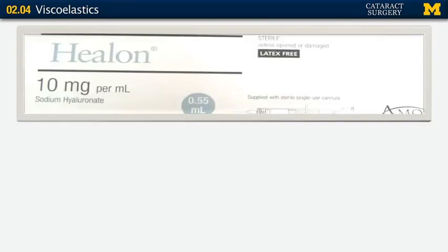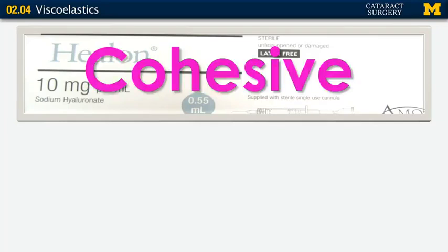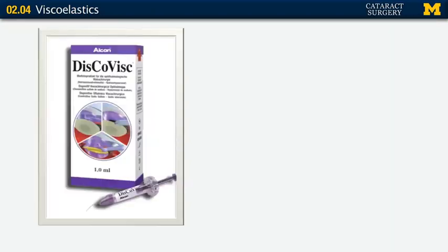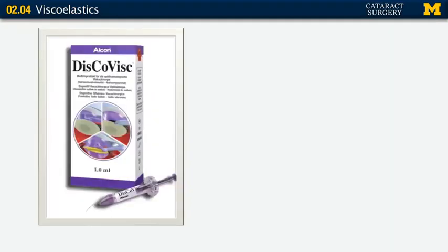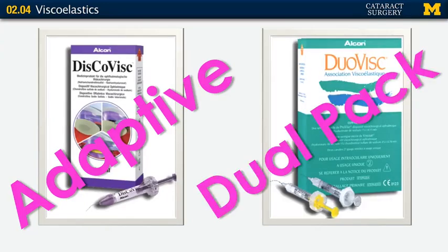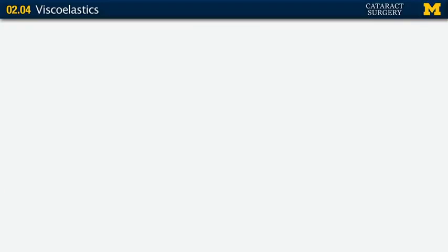Let's take a quiz. Can you tell me what type of OVD this is — cohesive, dispersive, or viscoadaptive? Healon is cohesive. Healon GV is also cohesive. DiscoVisc is adaptive — it has cohesive and dispersive properties depending on your flow rate. DuoVisc — if you guessed dual pack, you're right, because it has your dispersive agent and your cohesive agent so you don't have to have staff open two separate boxes.